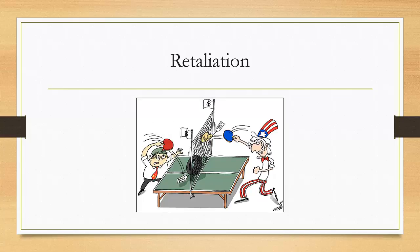Sometimes trade barriers are employed as a retaliation technique for political reasons. For example, the embargo against Cuba restricted all exports and imports between Cuba and the U.S. In a less extreme example, if France believed that the U.S. had allowed its wine producers to call sparkling wine champagne — a name specific to a region in France — for too long, it may levy a tariff on imports from the U.S. until the U.S. agrees to crack down on improper labeling. Often the threat of a retaliatory trade barrier is enough to create cooperation between two countries.